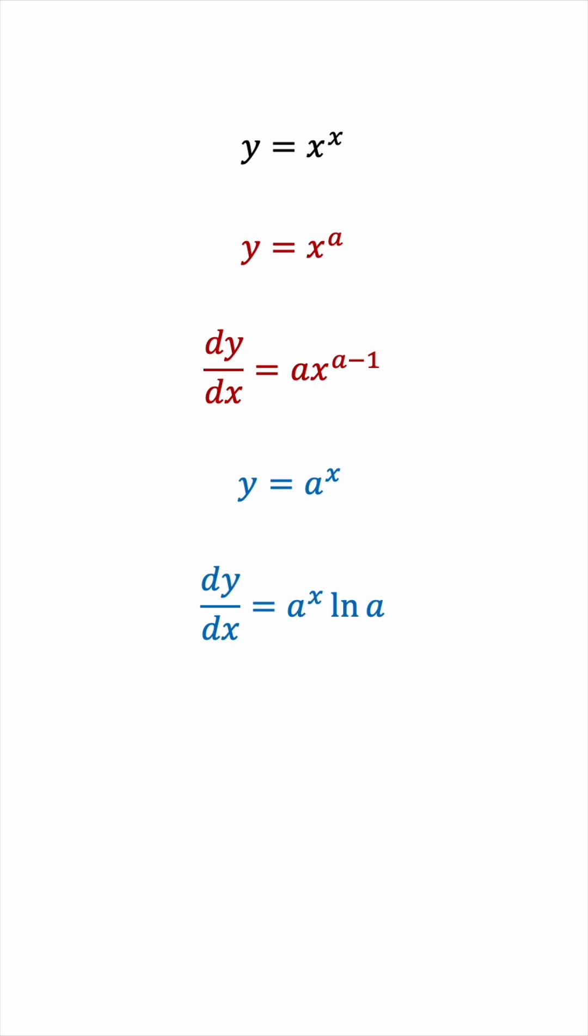In our case, we have x to the power of x, so both the base and exponent are variables. So, how can we really work with this?